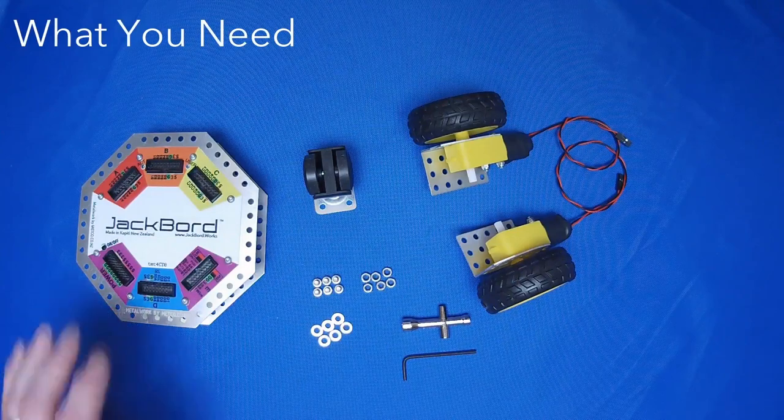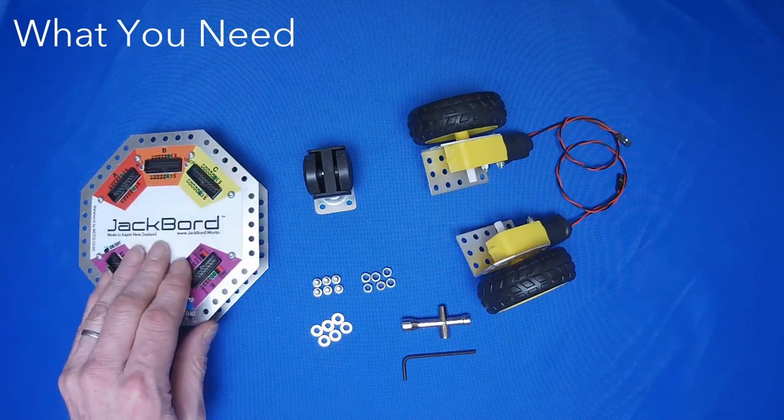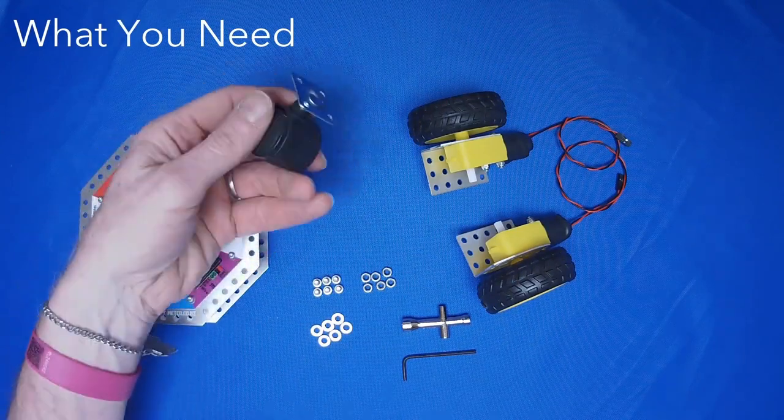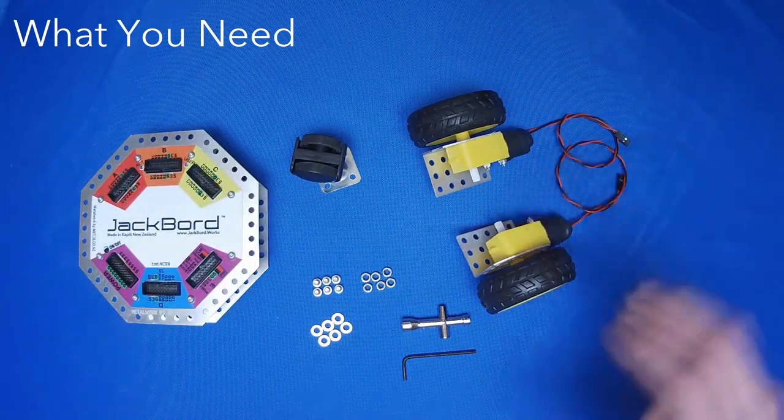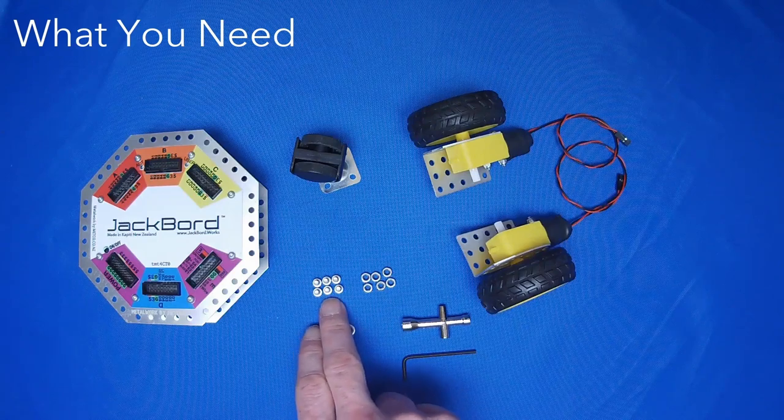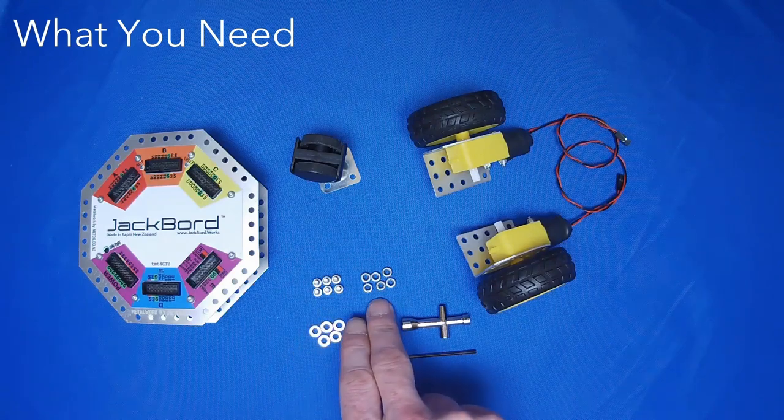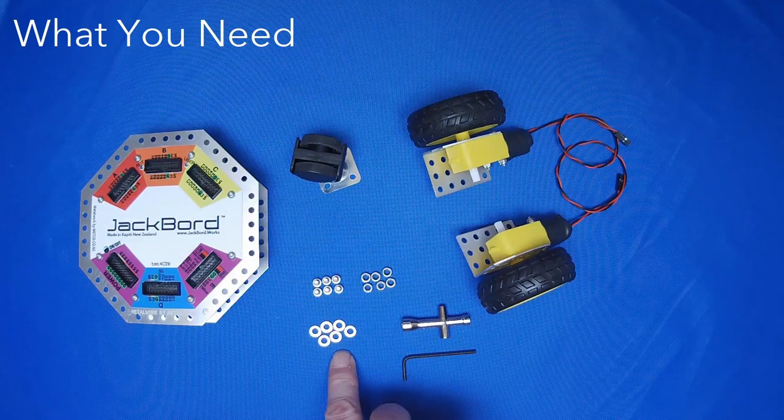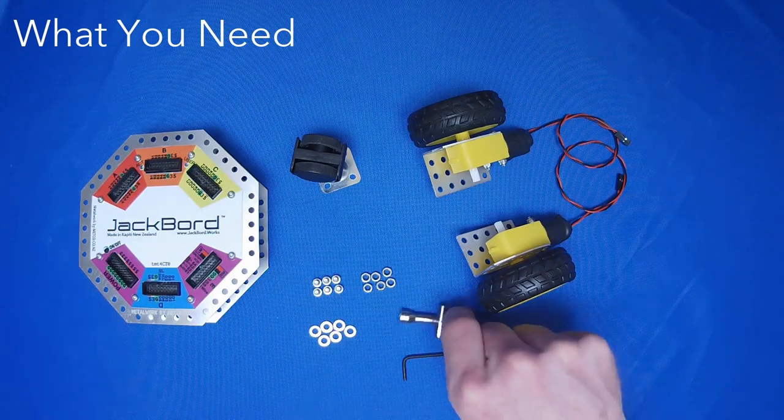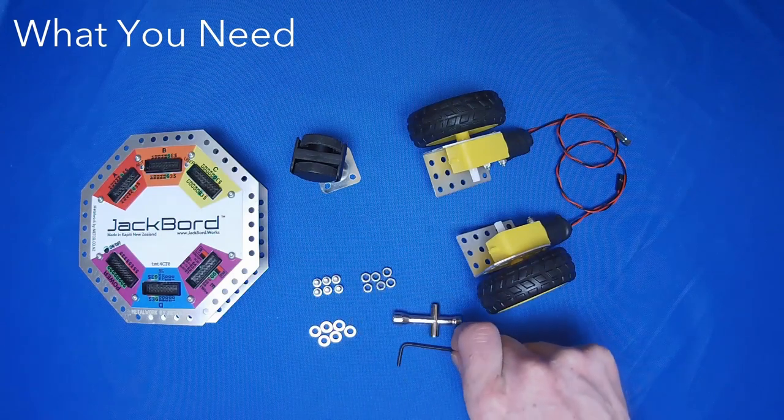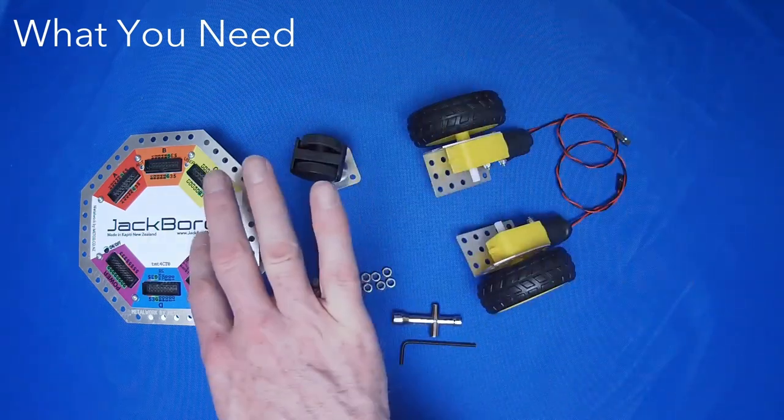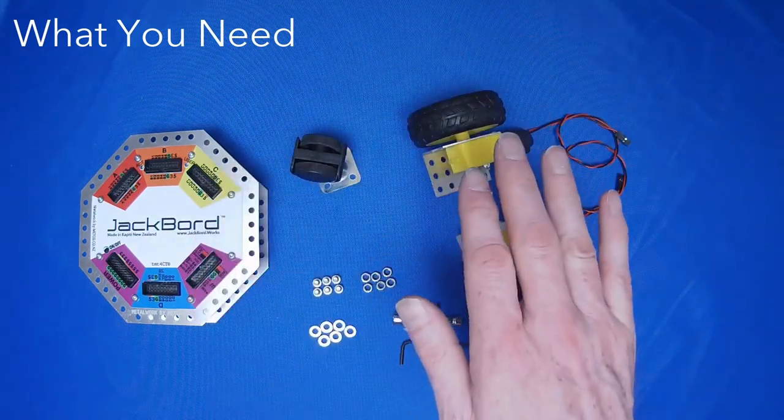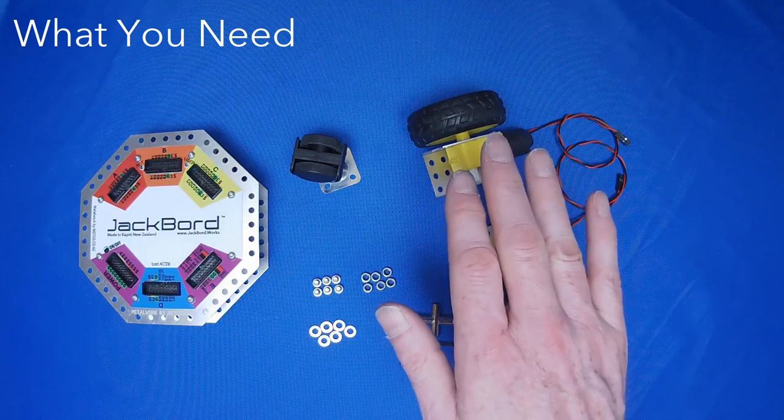For this video you're going to need a freshly charged JackBoard, one front trolley wheel, two drive motors, six M4 bolts, six M4 nuts, six M4 washers, one spanner for the nuts and one allen key. All of the items on this side except the JackBoard are included in the DRV1 motor drive kit.